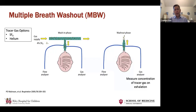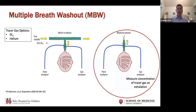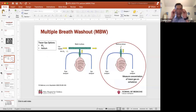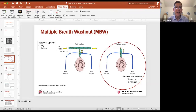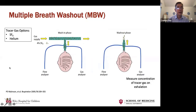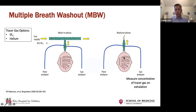One thing you can do is fill the lungs with a gas that typically isn't in ambient air. The two tracer gases that have been used are sulfur hexafluoride, or SF6, and helium. For example, you could have your patient breathe in 4% SF6. Since there's no SF6 in the air you're breathing right now, after a while your lungs will be filled with 4% SF6, and then you can wash it out with room air and measure that concentration of SF6.